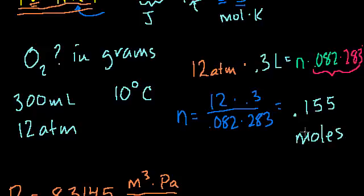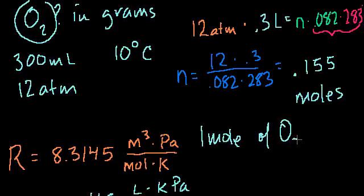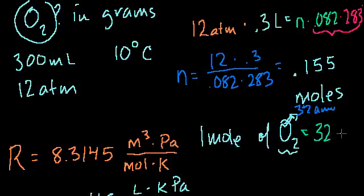Now how many grams are in one mole of oxygen, or an oxygen molecule? So 1 mole of O2. We know oxygen's atomic mass is 16. One molecule of gaseous oxygen has 2 atoms in it, so it has atomic mass of 32. So its molar mass, its mass per mole, is going to be 32 grams. Now we don't have one mole, we have 0.155 moles.